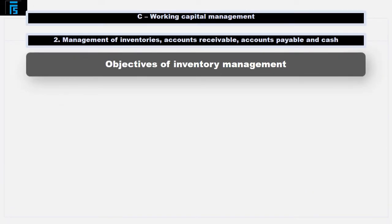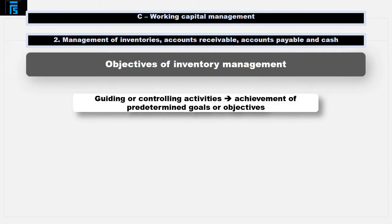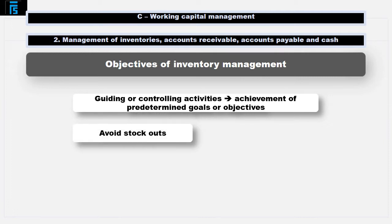Management implies guiding or controlling activities towards the achievement of pre-determined goals or objectives. Accordingly, before we can consider how inventory will be managed, it is necessary to clearly identify what we are trying to achieve. The objectives of inventory management are two-fold.